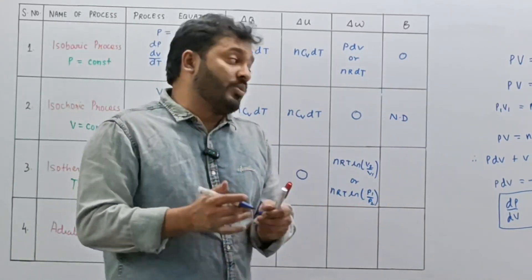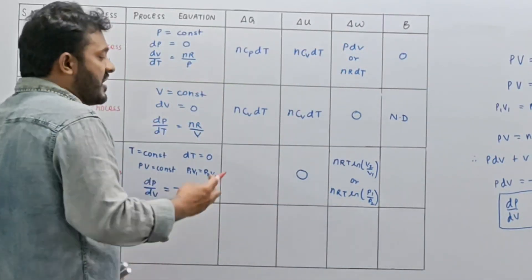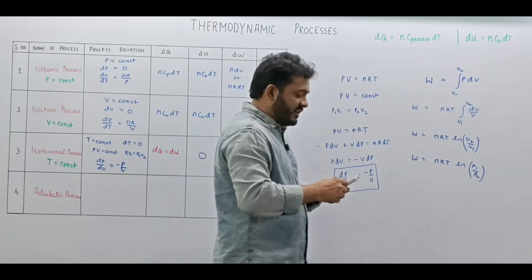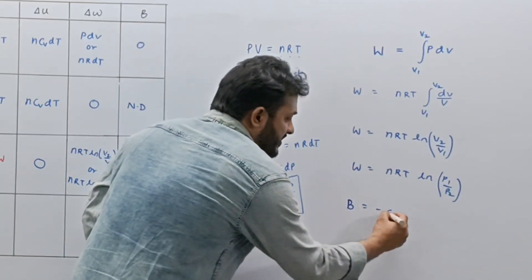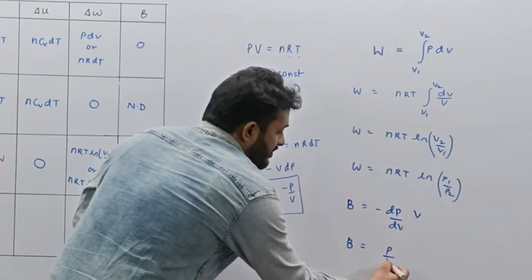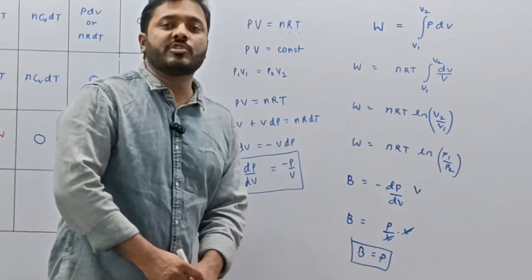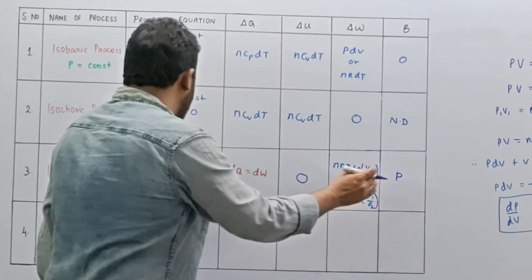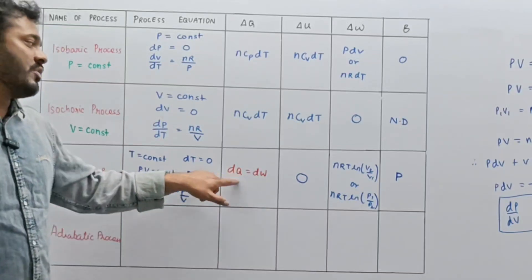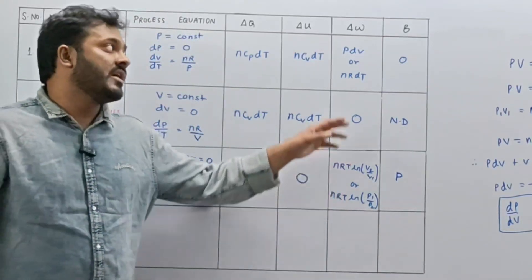There can be approximately 12 different ways to write work done for the isothermal process. The two main expressions are NRT ln(V2/V1) or NRT ln(P1/P2). Since DQ equals DU plus DW and DU equals 0, DQ equals DW for the isothermal process. For bulk modulus, since dP/dV equals minus P/V, bulk modulus equals minus(dP/dV)·V equals P for the isothermal process.